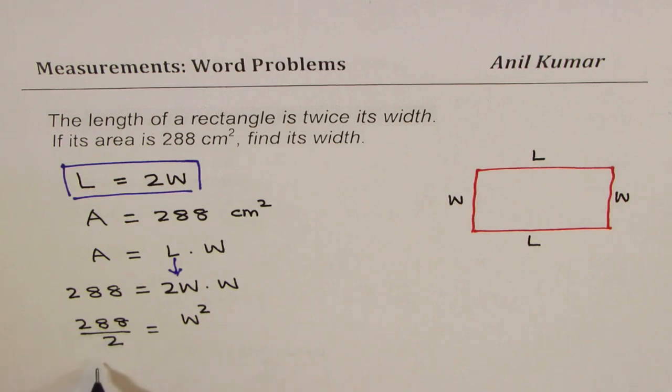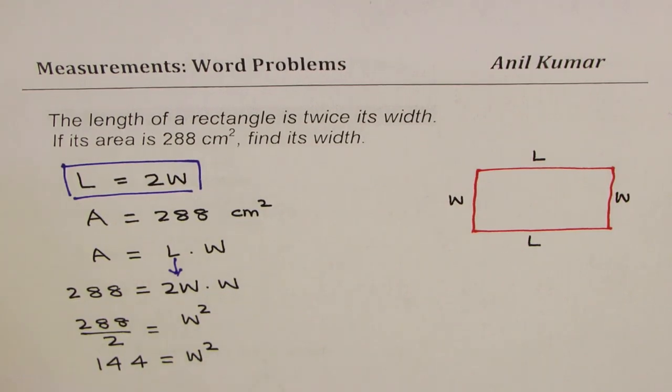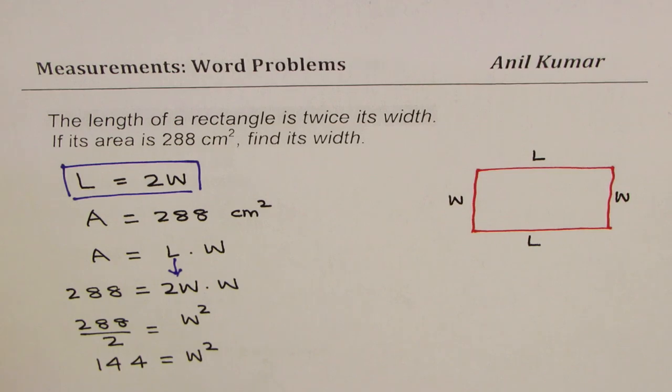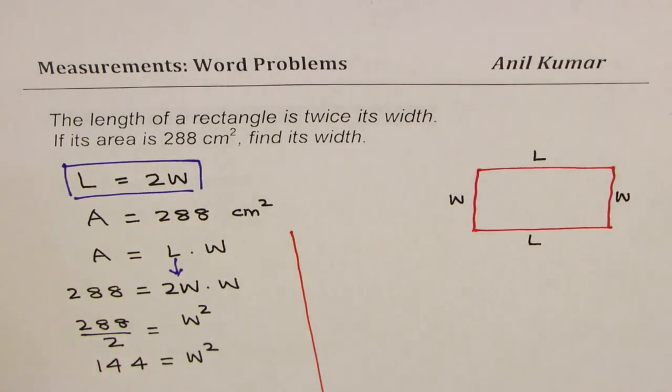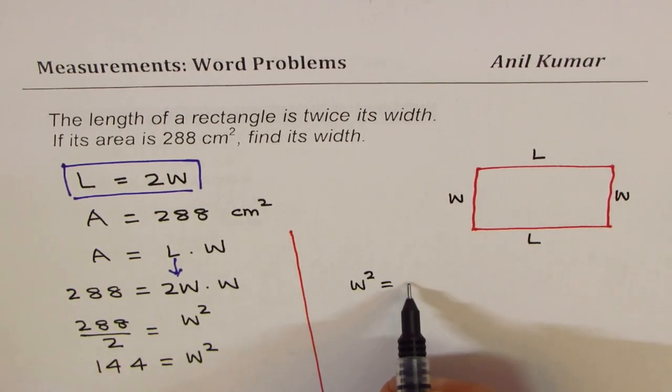288 divided by two is 144, so 144 is square of the width. So what is the width now? I hope you can calculate. Let's rewrite. So we are saying width square is 144.